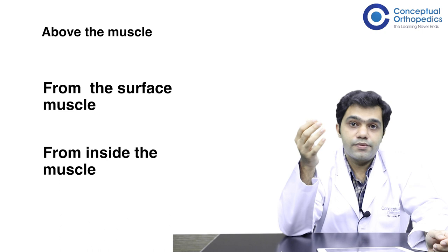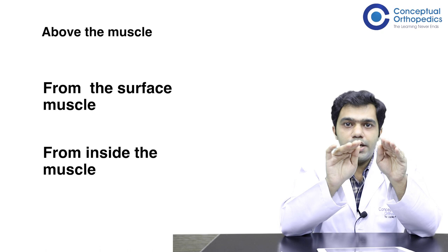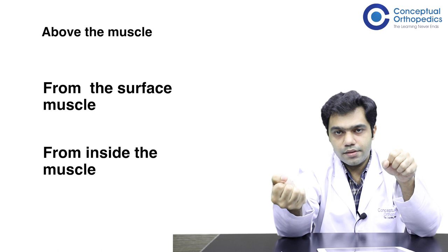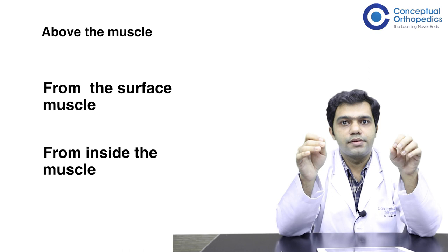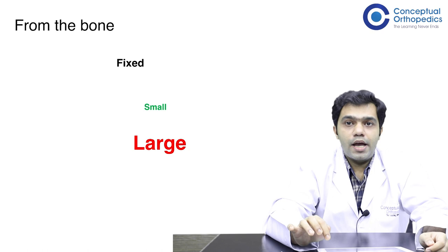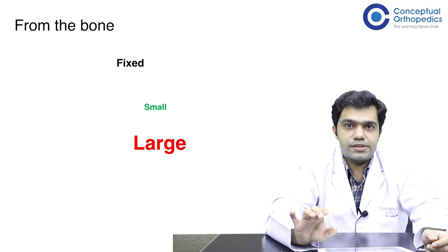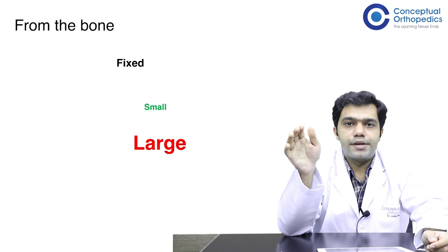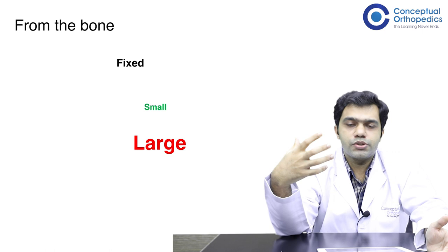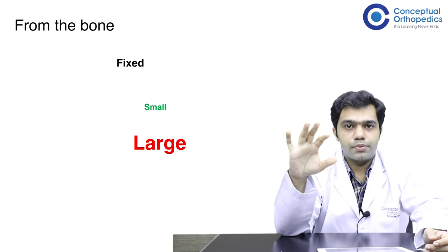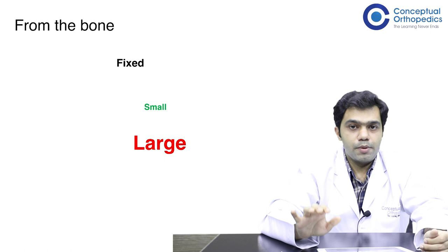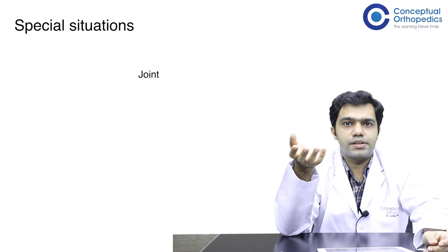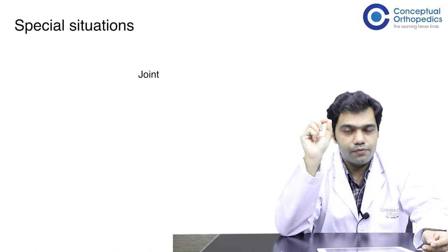If the swelling arises from within the muscle, you can visualize it on inspection, but when you ask the patient to contract the muscle the swelling size decreases. These are the three scenarios in relation to the muscle. For bony swellings, almost every time the swelling is fixed to the bone and cannot be moved in any plane. If it is a small swelling, contracting the muscle over it causes it to disappear; if it is a large diffuse swelling such as a tumor, the muscle contraction cannot cover it and it does not disappear.